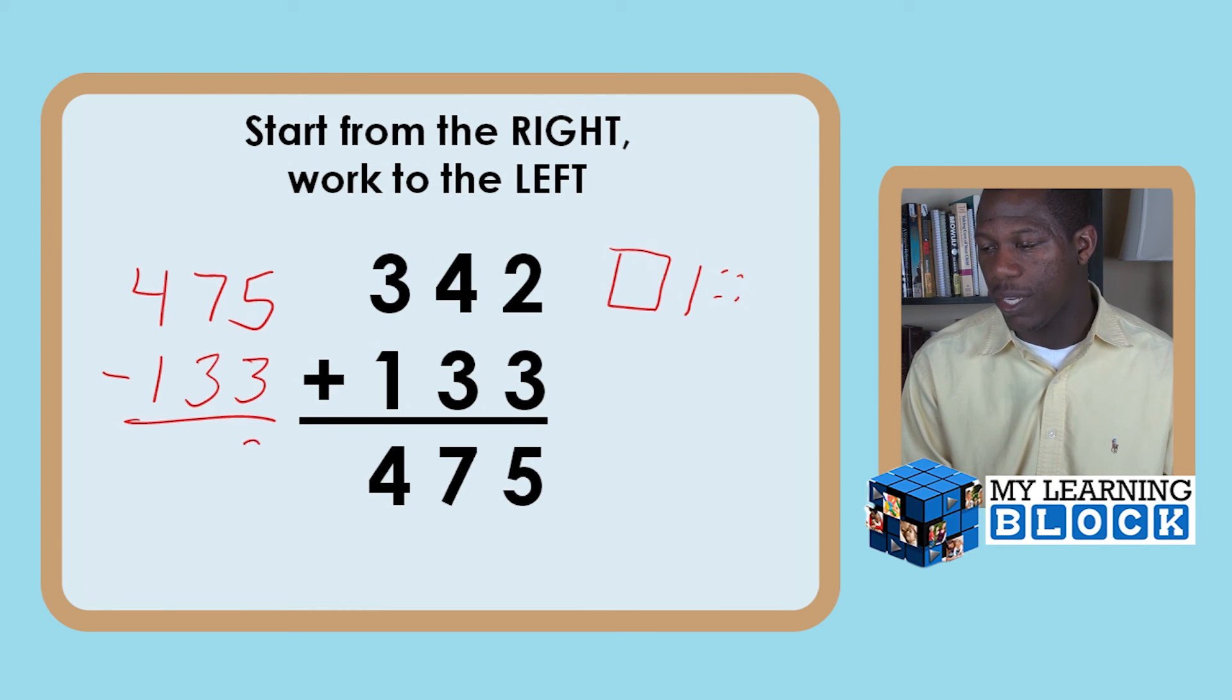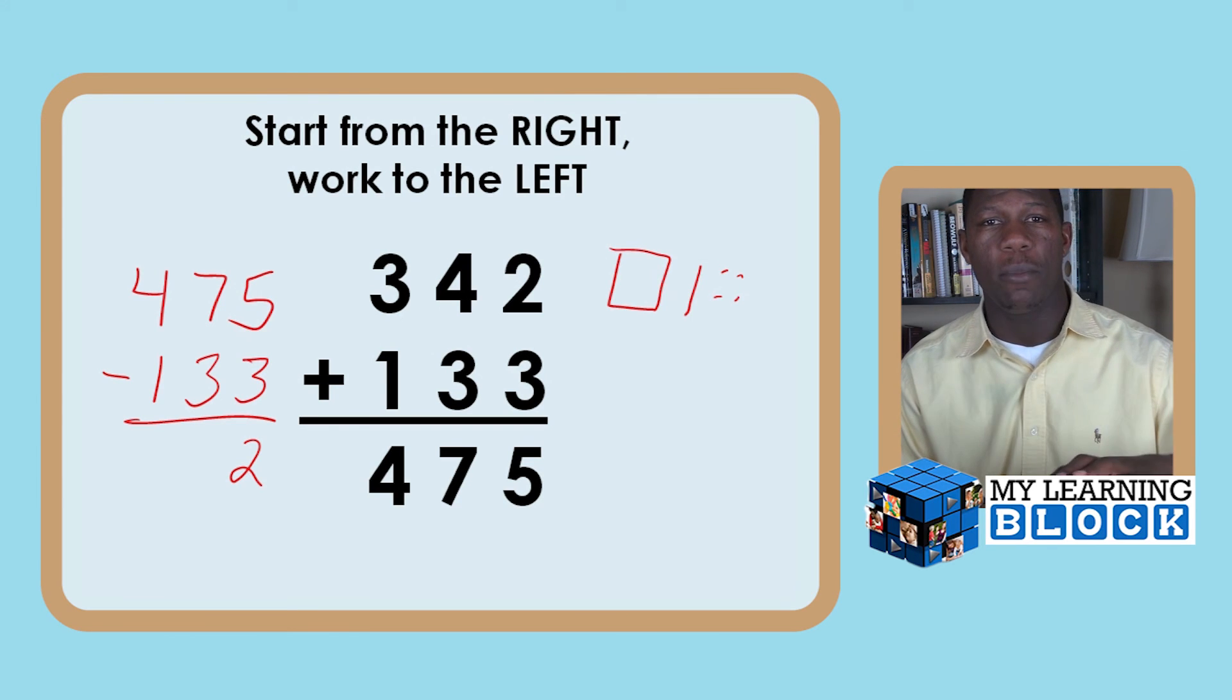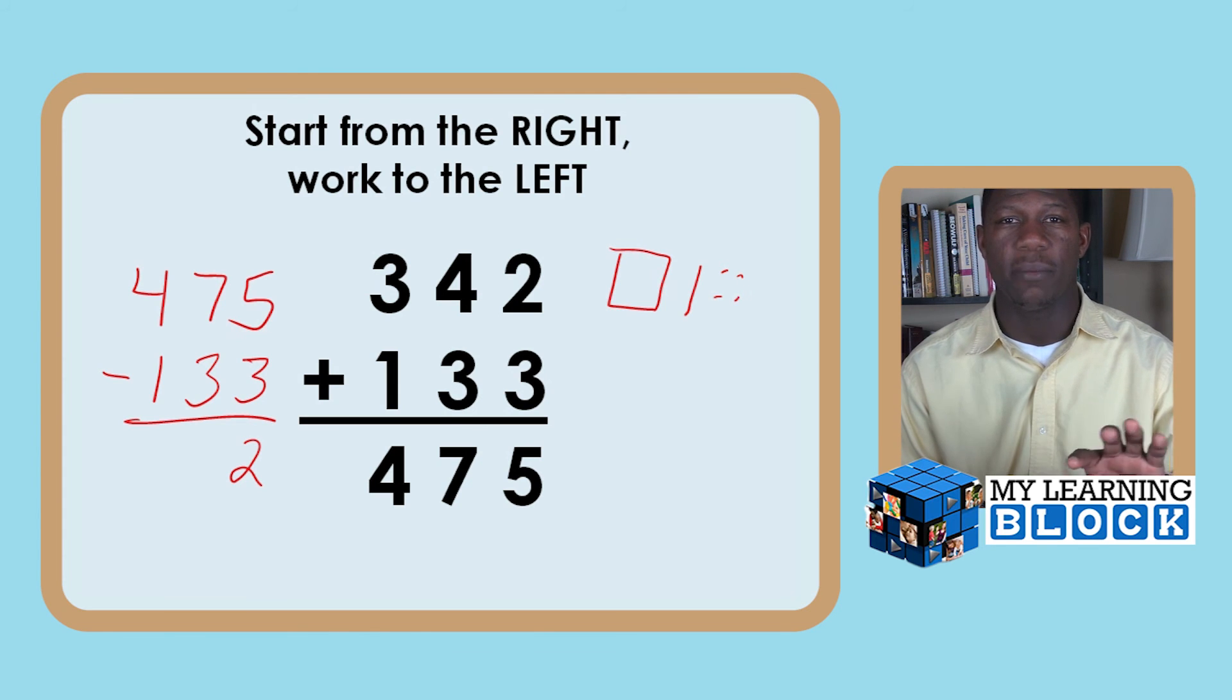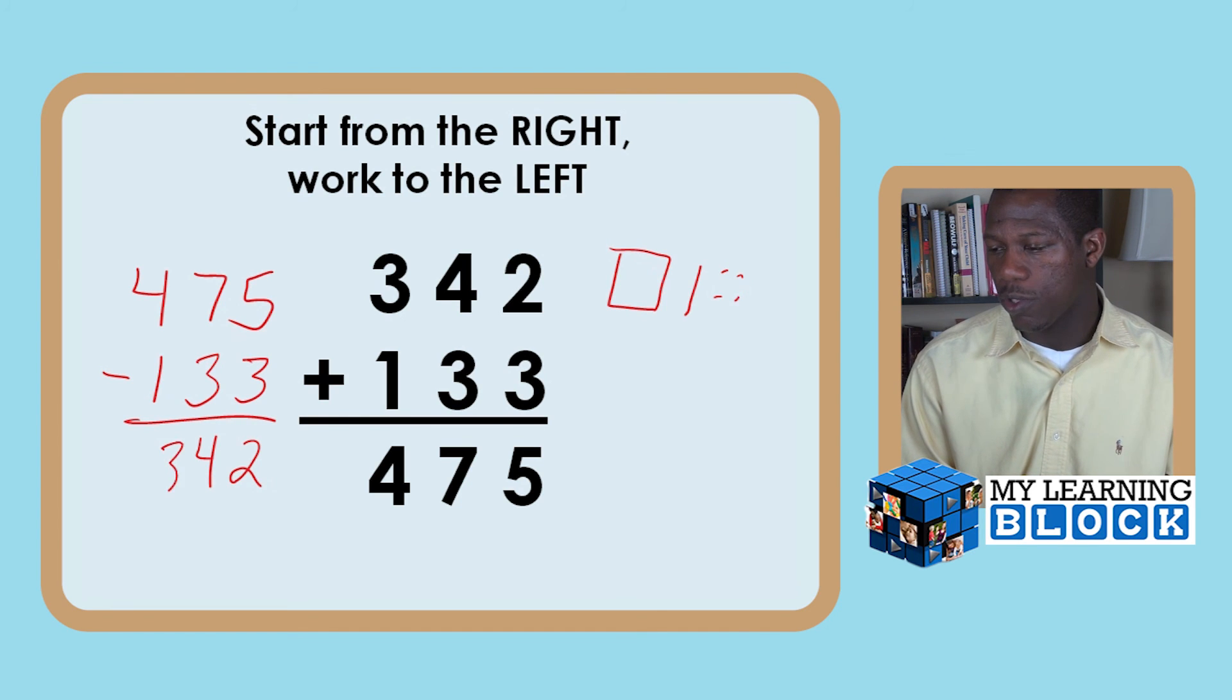5 minus 3, and we're going to work the subtraction algorithm. Check out that video simultaneously. It's very good to work these two concepts at the same time because your child's now checking the work. In both situations they're not having to regroup. 7 minus 3 equals 4 or 70 minus 30 equals 40. And 400 minus 100 or 4 minus 1 equals 3.